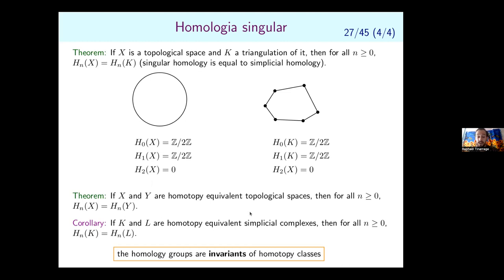With singular homology one can easily prove the invariance theorem: if two topological spaces X and Y are homotopy equivalent, their homology groups are equal. So singular homology is an invariant of homotopy classes. Combining this with the agreement between singular and simplicial homology, we get the same statement for simplicial homology: homotopy equivalent simplicial complexes have the same simplicial homology groups.